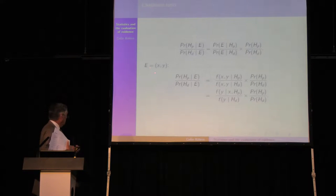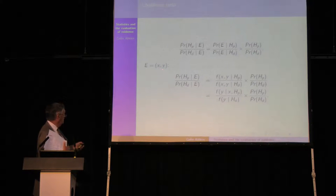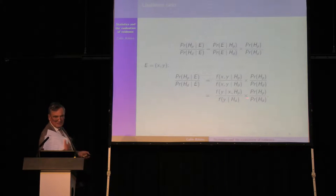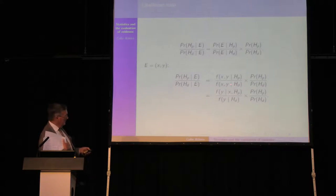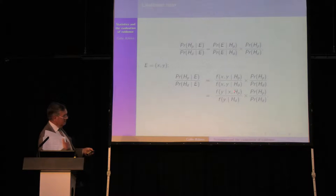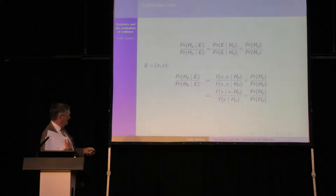If you're looking at evidence in the form of measurements, X would be measurements on a control source which you know, and Y on a recovered source whose origin you don't know. One way of looking at it is that the denominator is the marginal probability density function for the recovered data, and the numerator is a predictive density for the recovered data given the control data. So for refractive index measurements for glass, the denominator is a marginal distribution across some population of windows, the numerator is a predictive distribution given what you find at the scene of the crime on the control of the broken window, and these are measurements on fragments of glass found on a suspect.